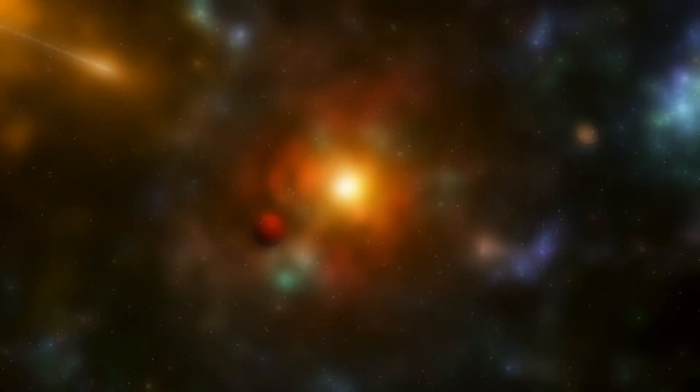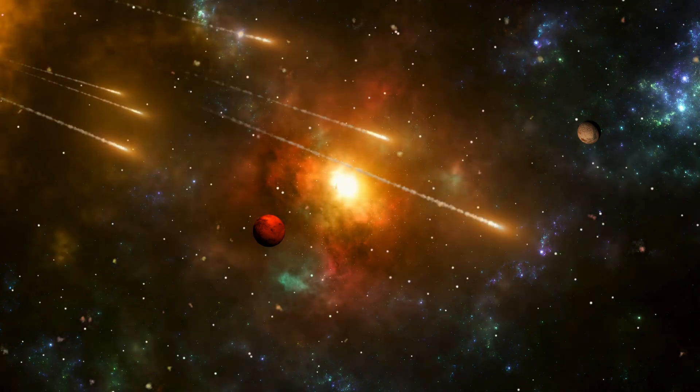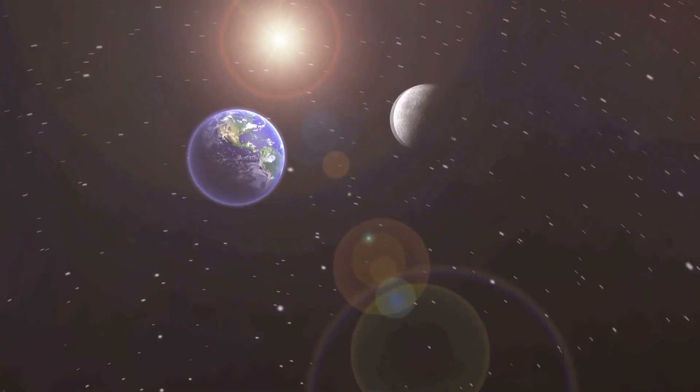Like any star, it will run out of fuel in its core and start changing. It begins bloating, engulfing the orbits of Mercury and Venus, and coming very close to Earth.